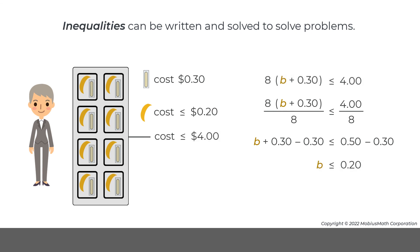Note, in this problem, when the division property of inequality was applied, the direction of the inequality sign did not change because the value being divided was positive.